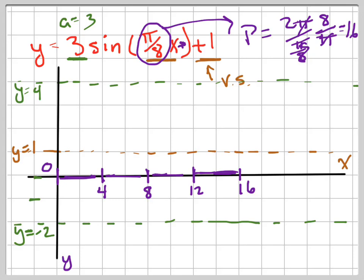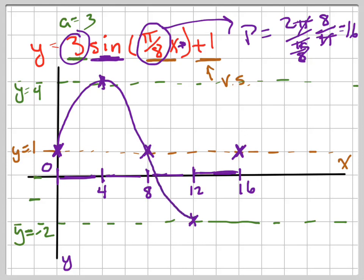Now it's just a matter of putting the 5 points in the right place. This is a sine graph, which means it starts in the middle — it's going to start in the middle, end in the middle, and be in the middle in the middle. The only question is does it start going up or down? Since it's positive, it starts going up. So right there is a point, and down here is a point. Now draw your graph in. It keeps going if you want, but a lot of times I just want you to draw one cycle.